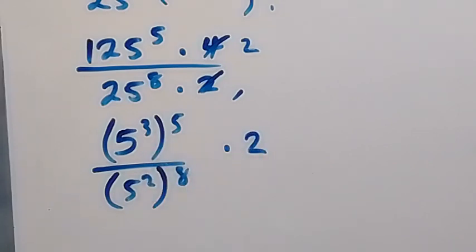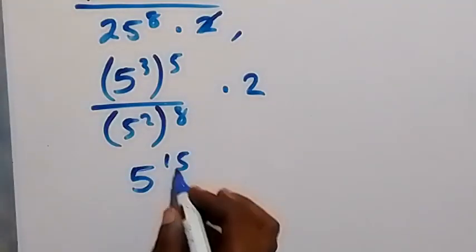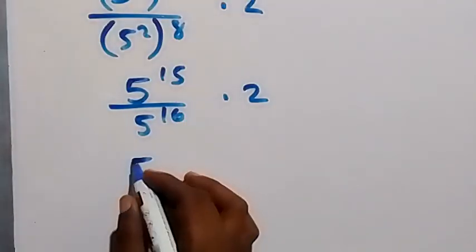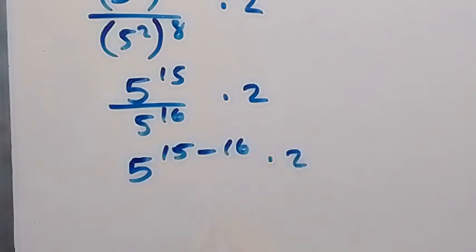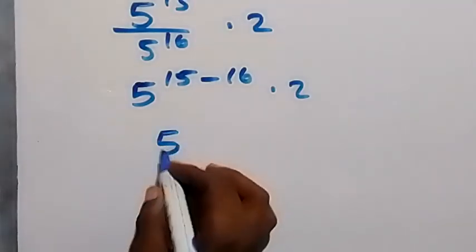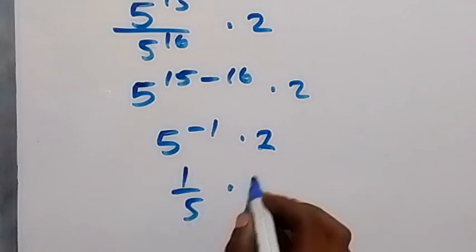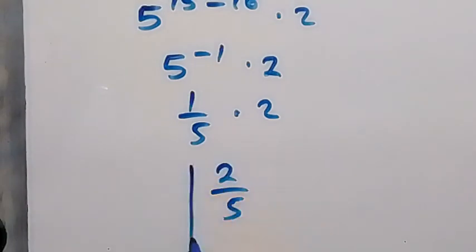Opening the powers using the law of indices, this gives us 5 raised to power 15 over 5 raised to power 16, times 2. Applying the law of indices again, we have 5 raised to power 15 minus 16 times 2, which is 5 raised to power minus 1 times 2. This can be written as 1 over 5 times 2, which is 2 over 5 — the same result as Method 1.